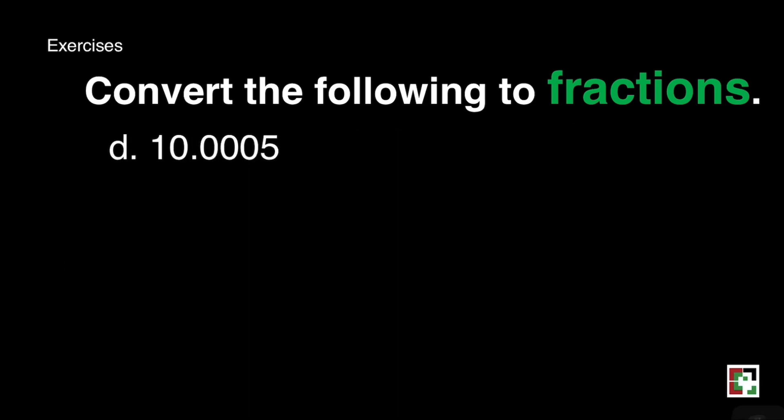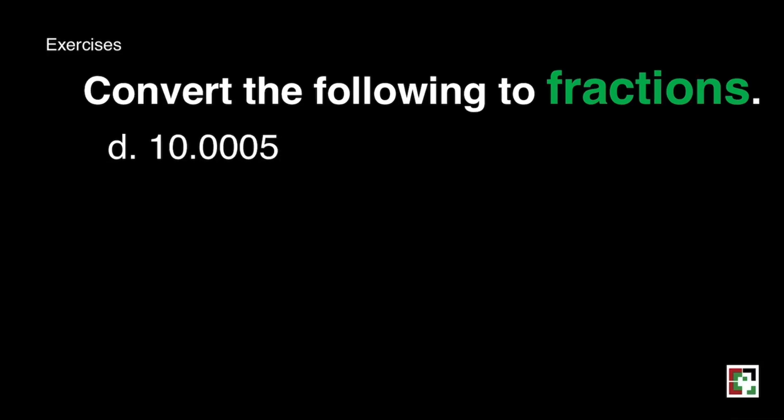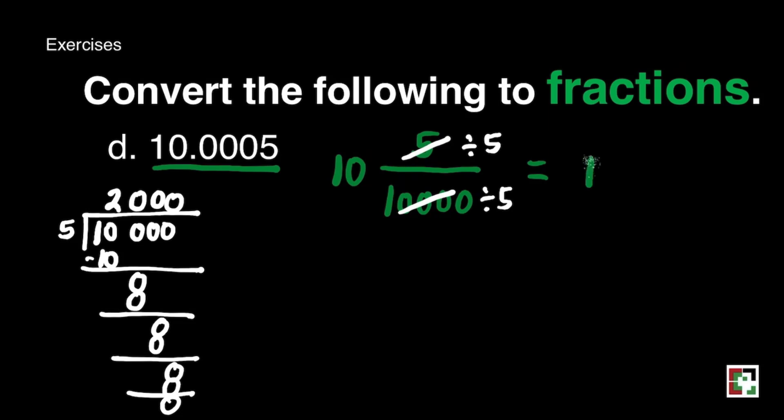Last one. We get 10 and 5 ten-thousandths. So I said just write what you have read. 10 and 5 ten-thousandths. Then do lowest term. What number can we divide both numbers? That's 5. 10,000 divided by 5 is 2,000. So our final answer is 10 and 1 over 2,000.